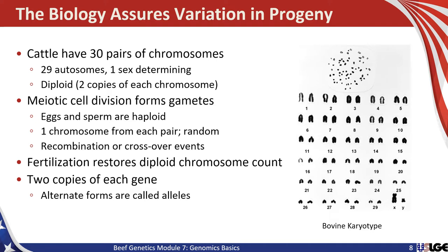During meiotic cell division that forms gametes, eggs and sperm cells are formed as haploid. So they get a random sample of the genetic material that parent has, formed into single copies of those chromosomes in each sperm or egg. One chromosome from each pair at random moves into the gamete. The Mendelian assortment creates variation across the 30 pairs of chromosomes — an animal at random gets one or the other of its parent's chromosomes.